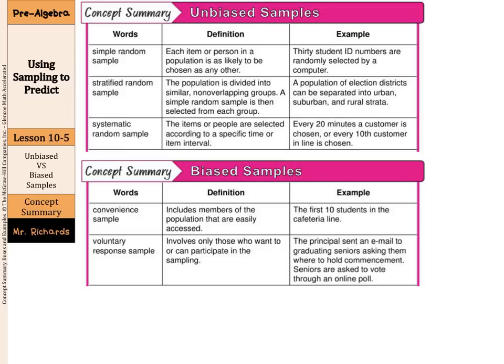Each grade gets just a simple random sample from there. Lastly, we have the systematic random sample. Items or people are selected according to a specific time or item interval — for example, every 20 minutes a customer is chosen, or every 10th customer in line is chosen. It's random but also systematic in that you have a set way of choosing the person.